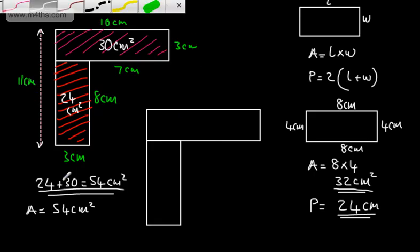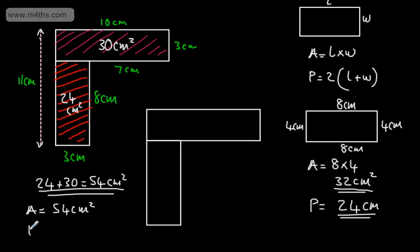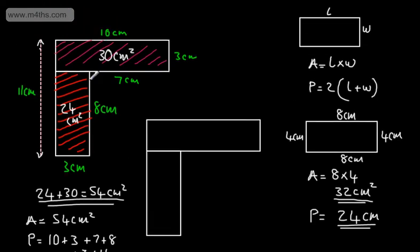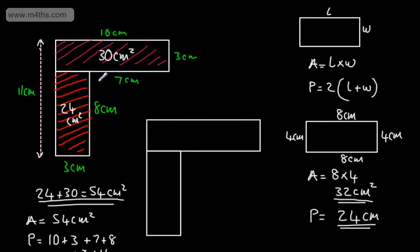That is the distance round the outside. So the perimeter equals 10 plus 3 plus 7 plus 8 plus 3 plus 11, which gives us 42 centimetres. When doing the perimeter, make sure you include all of the different lengths.